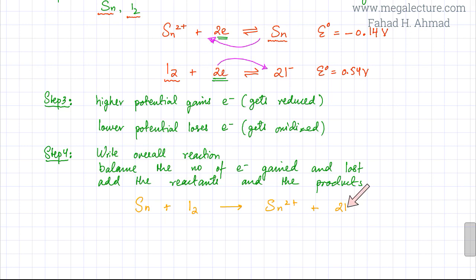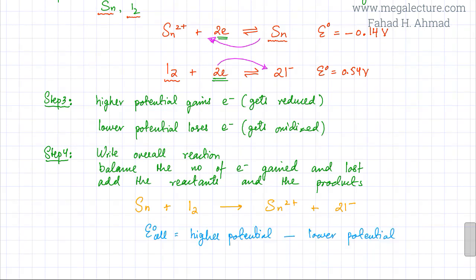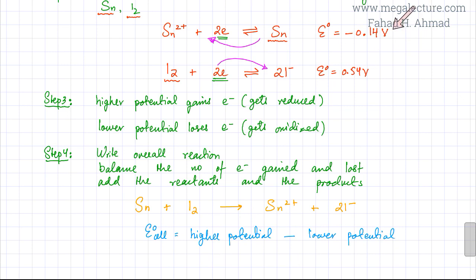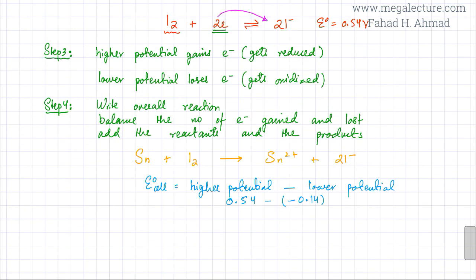This is my overall equation for this reaction. I can now calculate the E°cell, which is the higher potential minus the lower potential. So it's 0.54 − (−0.14) = 0.54 + 0.14 = 0.68 volts. That's the overall E°cell for the reaction, and this gives me an idea of how readily the reaction will take place.